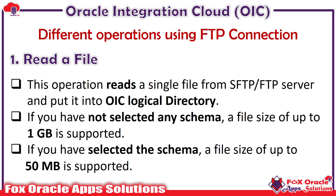The first operation is read a file. With this operation we can read a single file from a source directory — meaning the SFTP directory — to the OIC logical directory, and thereafter we can perform other operations as required. When we use read a file and provide a file structure such as CSV, the file size limit is 50 MB. If we do not provide any file structure while reading, we can download a file from the SFTP server to the local OIC directory up to 1 GB.